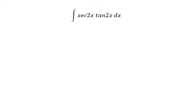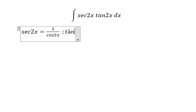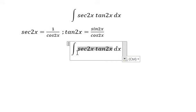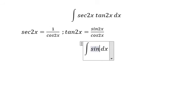We have the formulas: sec 2x equals 1 over cos 2x, and tan 2x equals sin 2x over cos 2x. So we rewrite this integral as sin 2x over cos squared 2x dx. Now we can use integration by substitution.